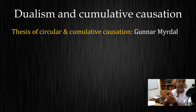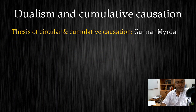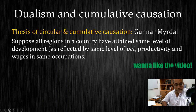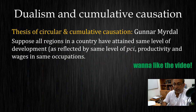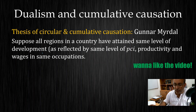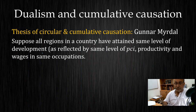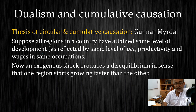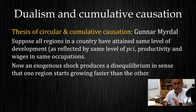The periphery — everything other than that dominant region — will be developing much slower. So how is this theory circular and cumulative? What Myrdal says is this: let's assume for the time being that all regions in a country are at the same level of development, measured by per capita income, same level of productivity, and same wages in similar occupations. Then we bring in an exogenous shock that creates a disequilibrium between regions — one region suddenly starts growing faster than the other.